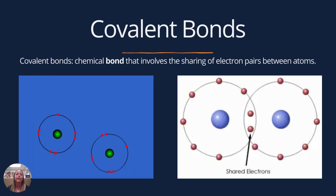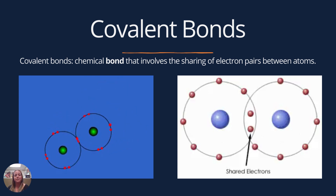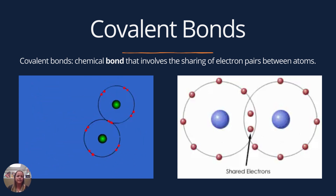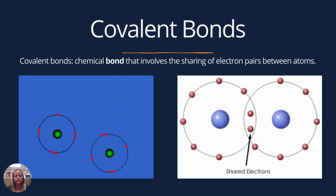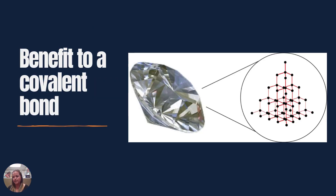Covalent bonds are very strong because they share the last electron together. Each atom has seven electrons on their outer shell, and they share two of those electrons so that they each have eight. This creates really, really strong materials, like diamond. Diamond is made up of a bunch of covalently bonded carbon atoms, creating a really strong bond. When you try to cut diamond, the only thing that will cut it is a diamond-cut blade — you need diamond in your blade to actually cut diamond. It's such a strongly bonded mineral that it's really resistant to a lot of things.